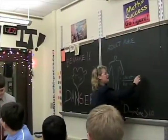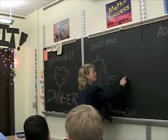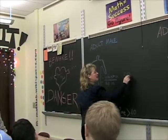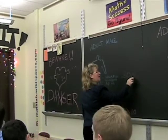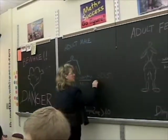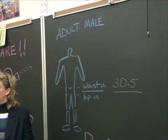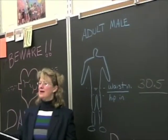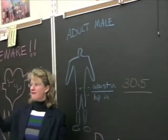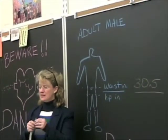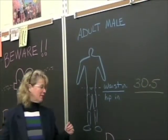We got a waist measurement of 30.5 on Mr. Blows. Now we're going to go down and measure around the fattiest part of his buttocks.